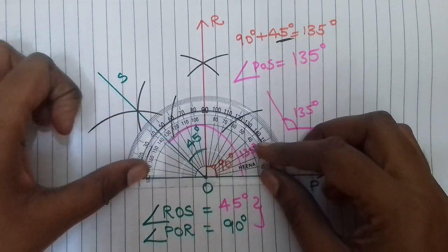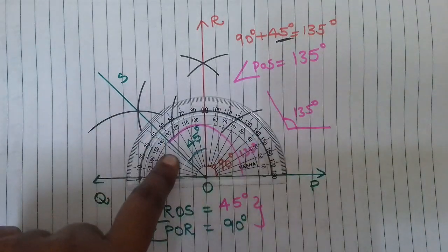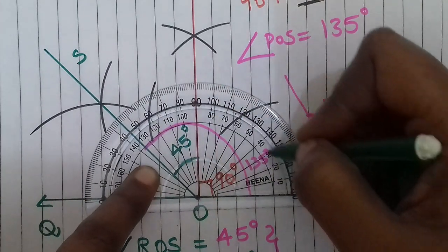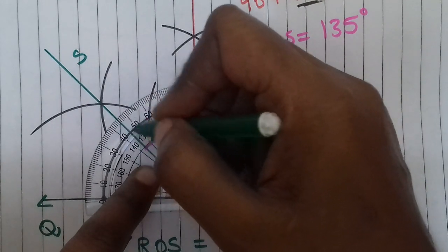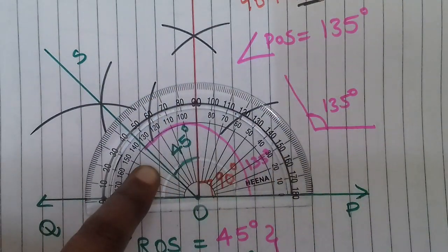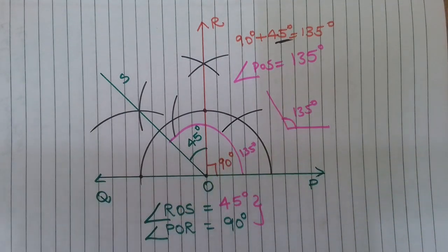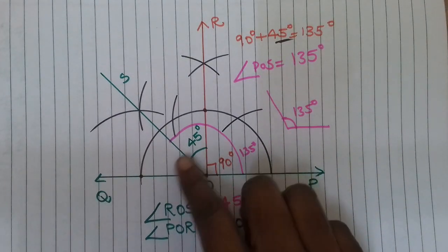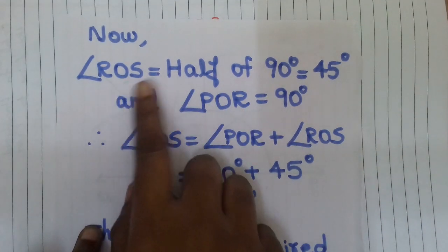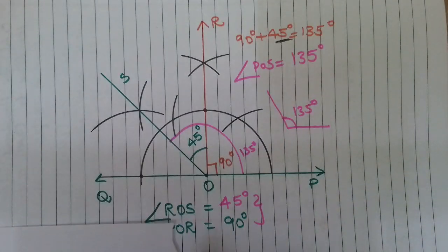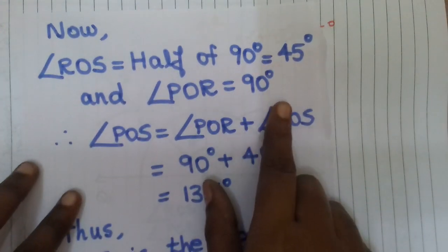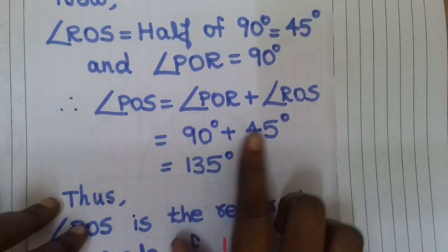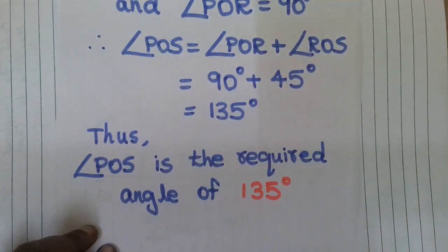Using the protractor on the inner scale, this angle reads from 0 to 135. This angle is 135 degrees. Finally, angle POS total is 135 degrees. ROS is 45 degrees — that is half of 90 degrees. Angle POR is 90 degrees. So angle POS, the total, is 135 degrees. Angle POS is the required angle of 135 degrees.